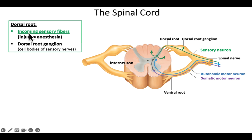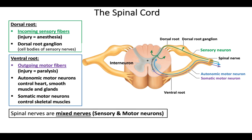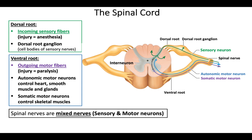The dorsal root contains incoming sensory fibers. The dorsal root ganglion contains the cell bodies of the sensory neurons. If there was some sort of injury to a dorsal root, that would cause anesthesia — the blockage of sensory signals into your CNS. The motor nerves are coming out the ventral root, and the ventral root does not have a ganglion because the cell bodies are actually located within the spinal cord.